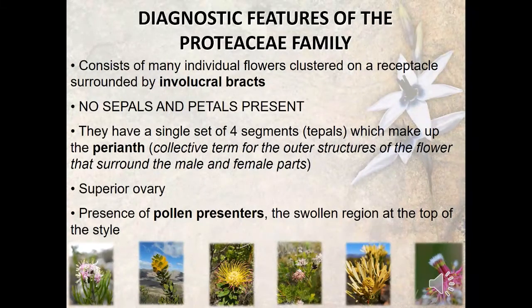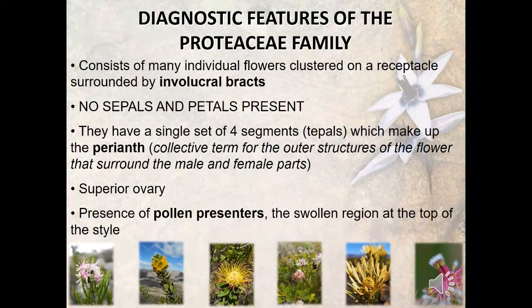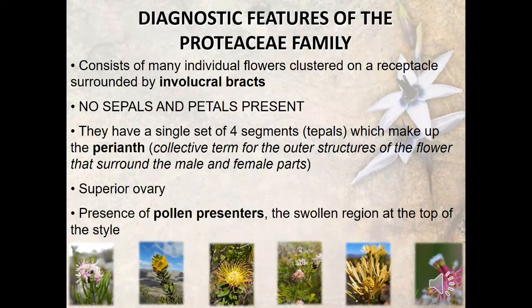So what are the diagnostic characters of the Proteaceae family? Proteas have many individual flowers that are clustered on a receptacle surrounded by involucral bracts. These involucral bracts can either be quite conspicuous, like in the Protea genus, or very inconspicuous, like in the Leucospermum genus. We will have a look at these flower types a little bit later on.